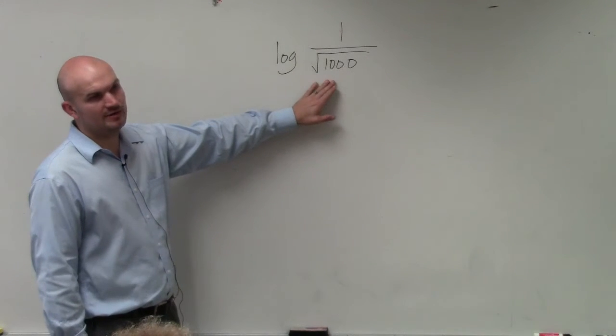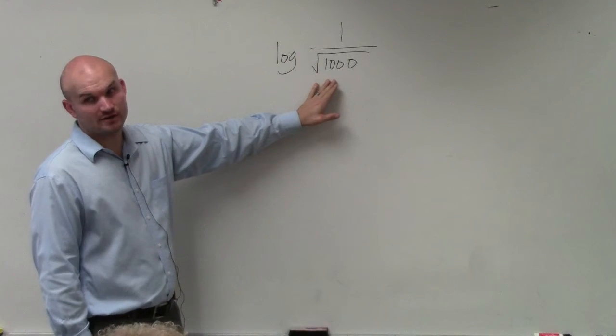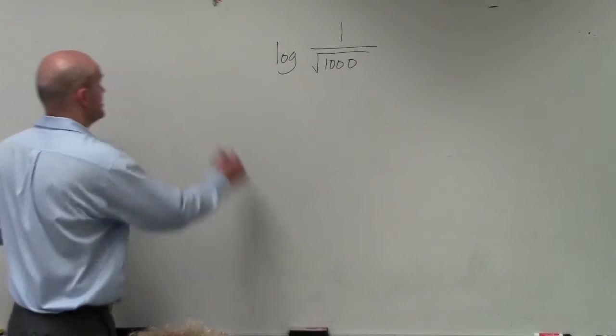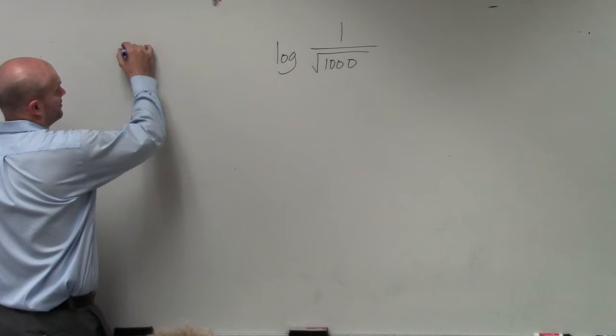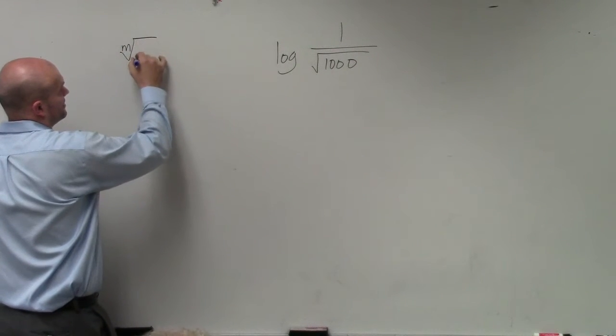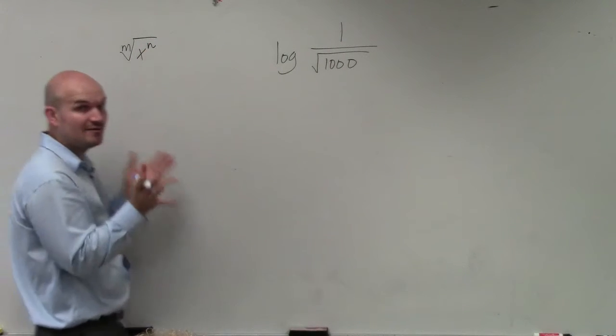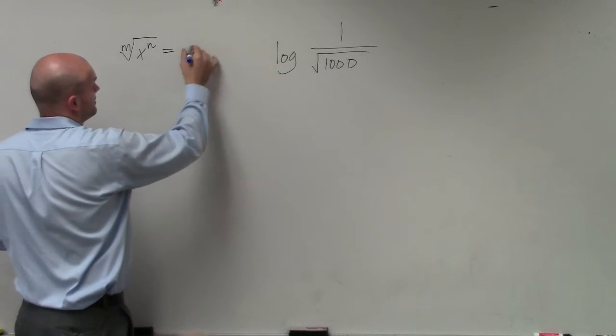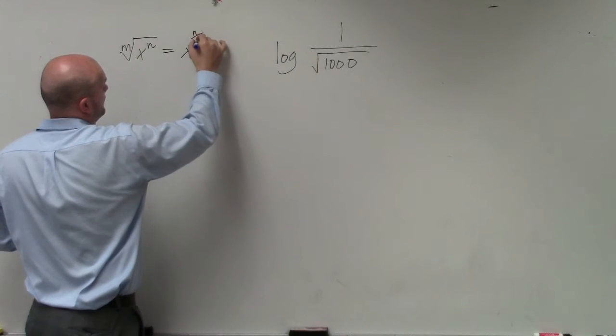First of all, we do not like having radicals. So we need to remember: the m-th root of x to the n. Anytime we have a radical, we can always rewrite that as a rational power—x to the n over m.